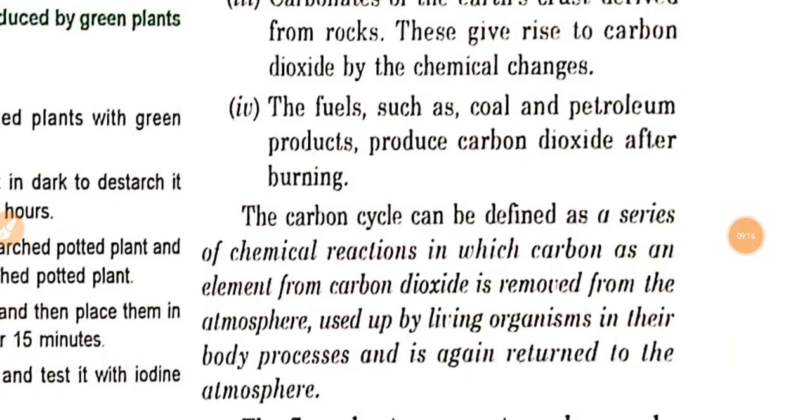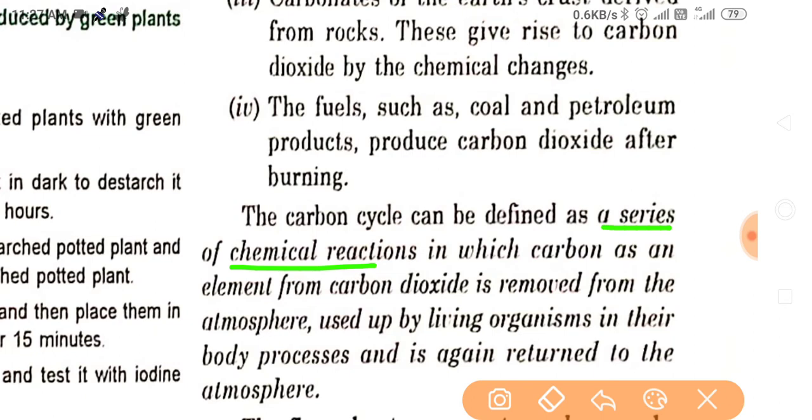How can you define this carbon cycle scientifically? A series of chemical reactions in which carbon as an element from carbon dioxide is removed from the atmosphere, used up by living organisms in their body processes, and is again returned to the atmosphere. This is called a cycle. You can define it as a series of chemical reactions in which carbon as an element from carbon dioxide is removed from the atmosphere—this is the punchline—used up by living organisms in their body processes, and is again returned to the atmosphere. This is called a carbon cycle.